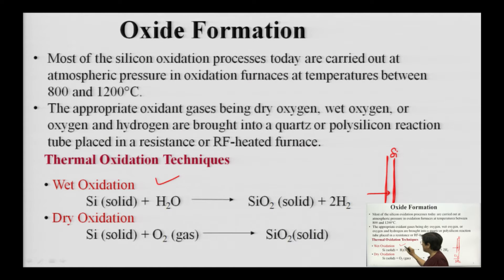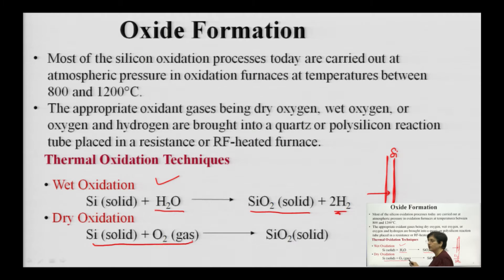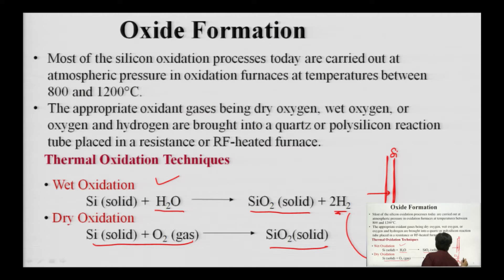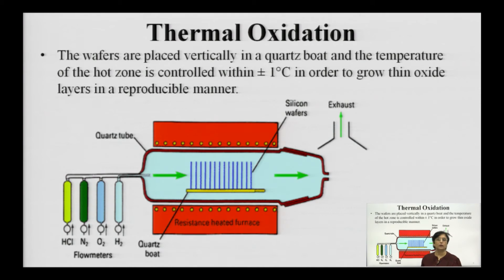There are two reactions: wet oxidation takes place in the presence of moisture — H2O reacts with silicon to give SiO2 and hydrogen. Dry oxidation happens in the presence of oxygen, giving silicon dioxide. Please note the safety concern related to hydrogen: wet oxidation produces hydrogen as a byproduct, which has explosive nature, and you need to take many safety measures while handling such equipment.